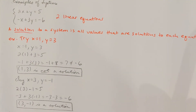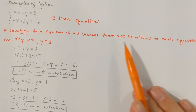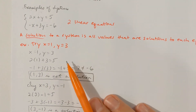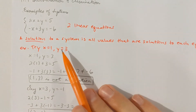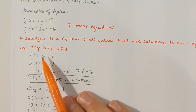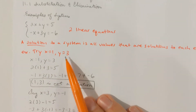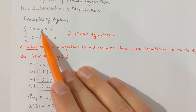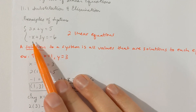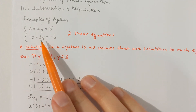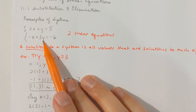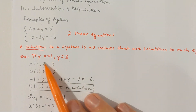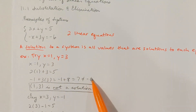A solution to the system is all the values that are solutions to each equation. So if we were to try to solve the system, maybe we were going to try x equal 1 and y equal 3. If x is 1 and y is 3, 2 plus 3 is 5, but negative 1 plus 9 is not negative 6. So 1 and 3 would not work out for us here.